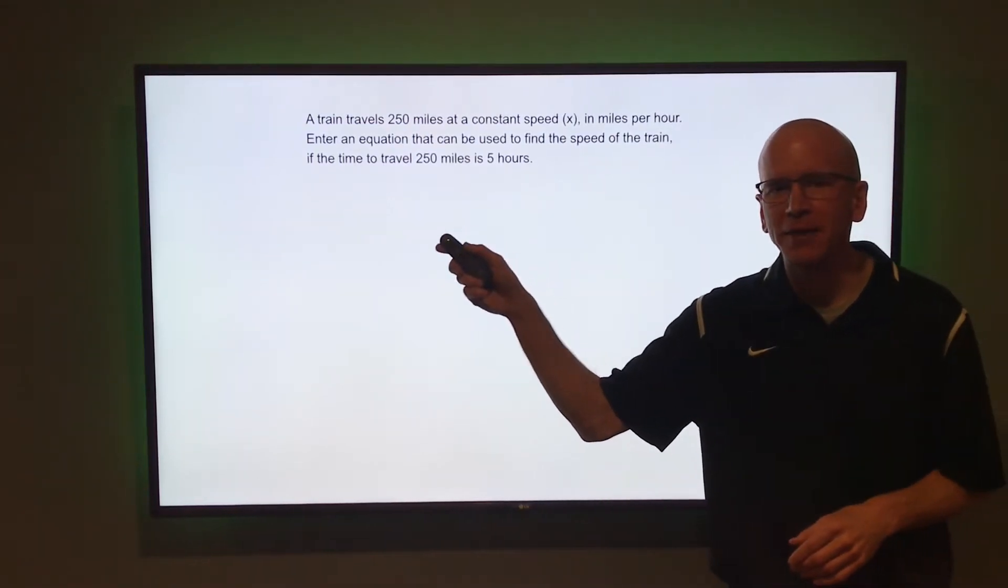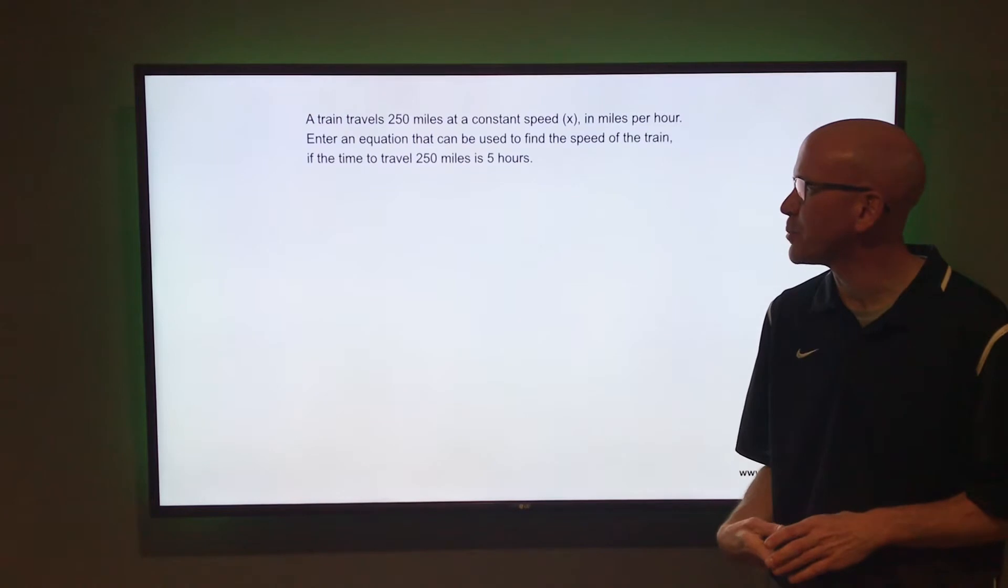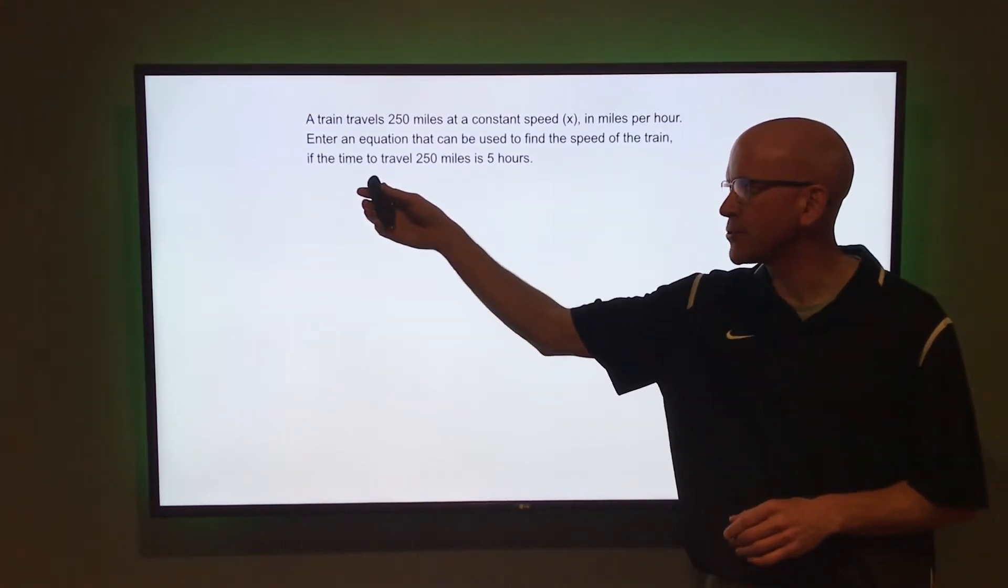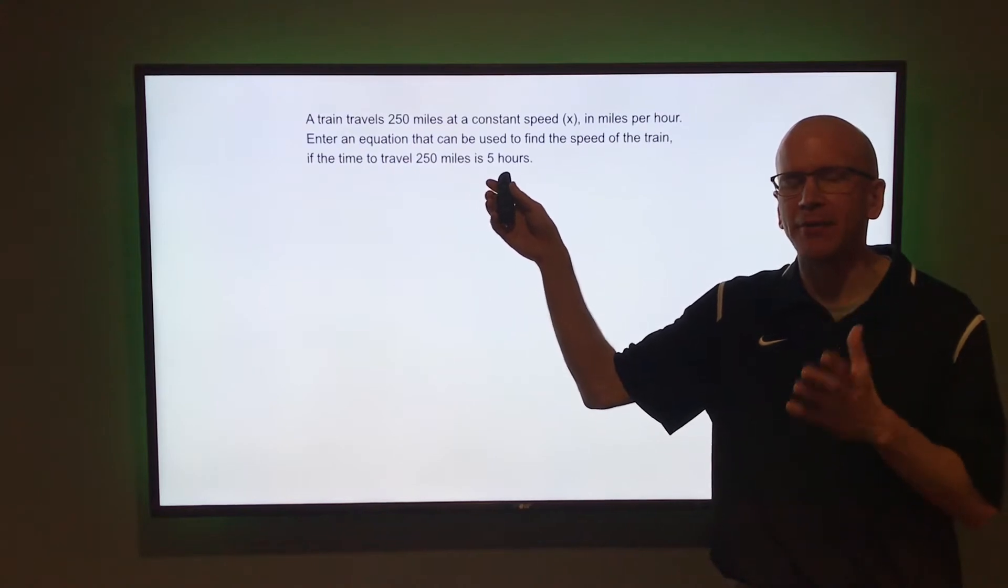A train travels 250 miles at a constant speed x in miles per hour. Enter an equation that can be used to find the speed of the train if the time to travel 250 miles is five hours.